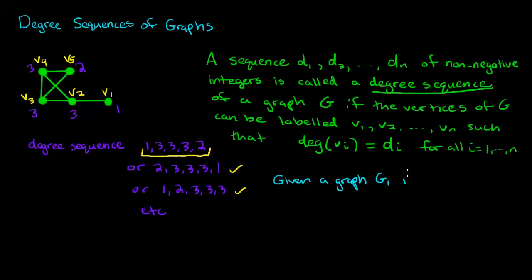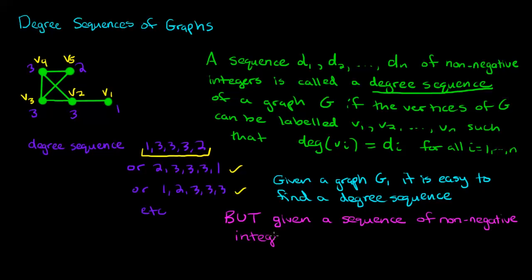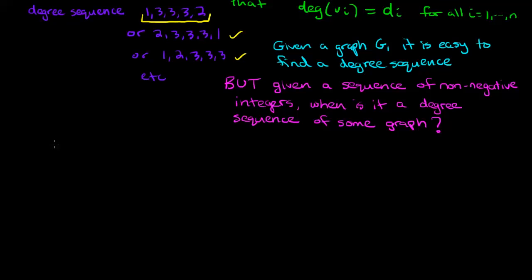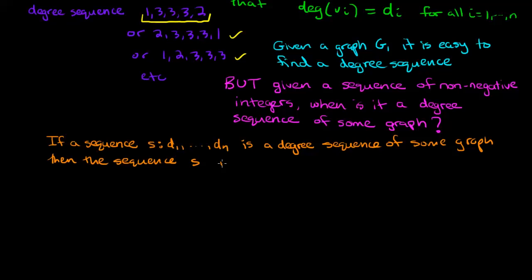We've seen that given a graph g it is easy to find a degree sequence, but if we're given a sequence of non-negative integers when is it a degree sequence of some graph? That question is much harder to answer in general. If a sequence s which is the sequence d1 up to dn is a degree sequence of some graph then the sequence s is called a graphical sequence.